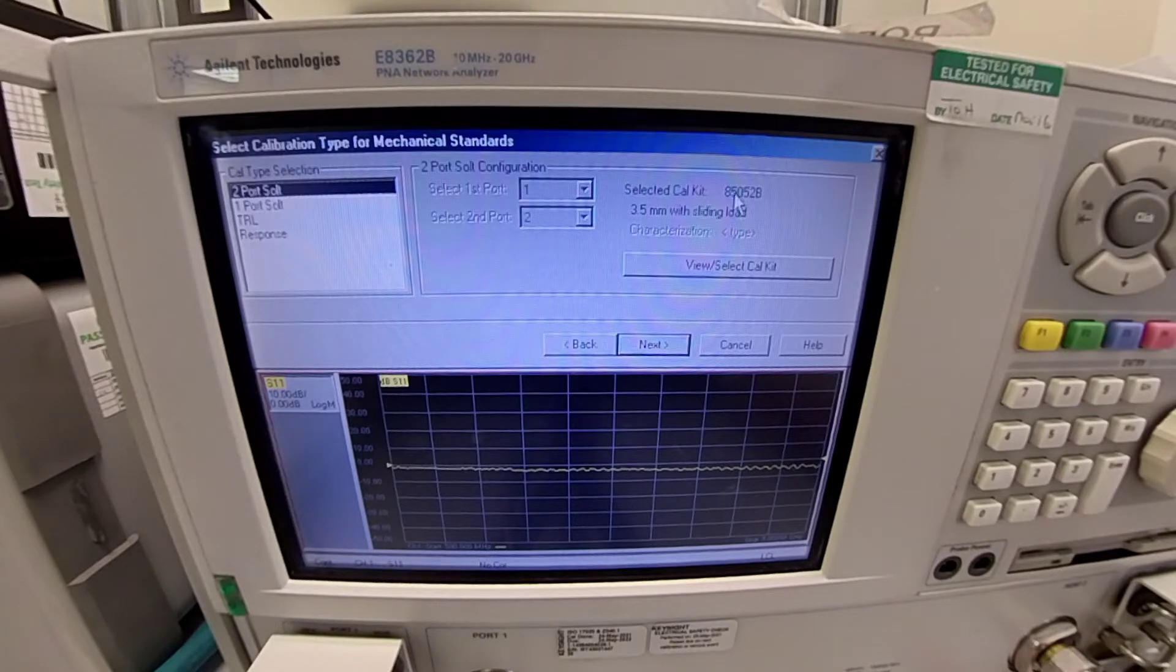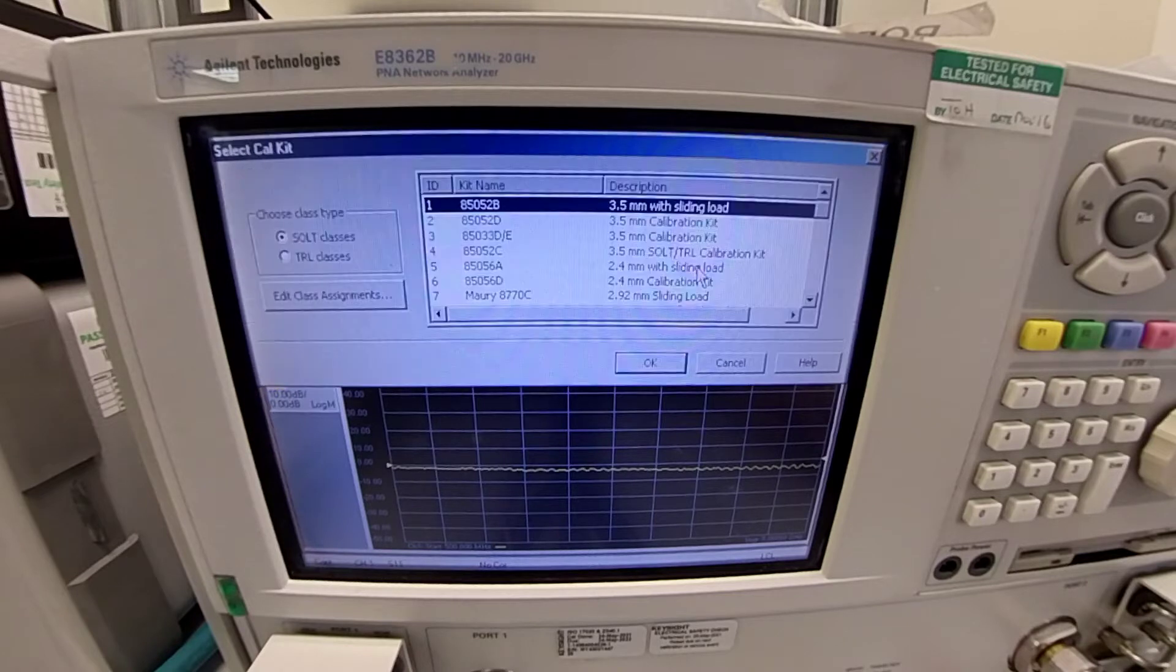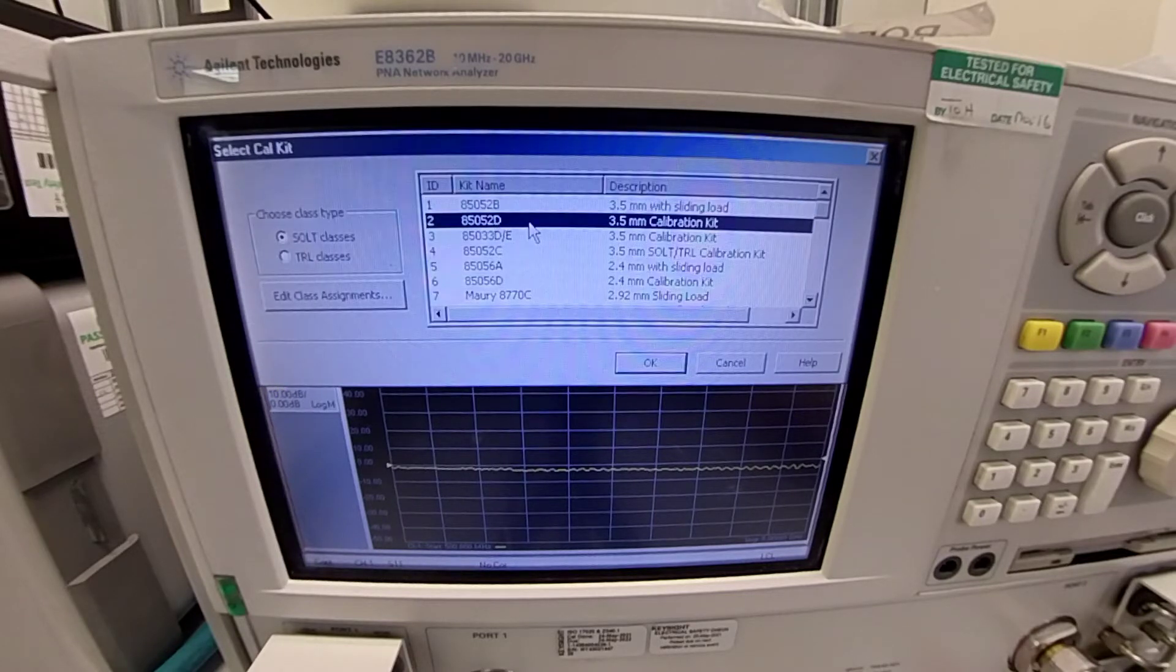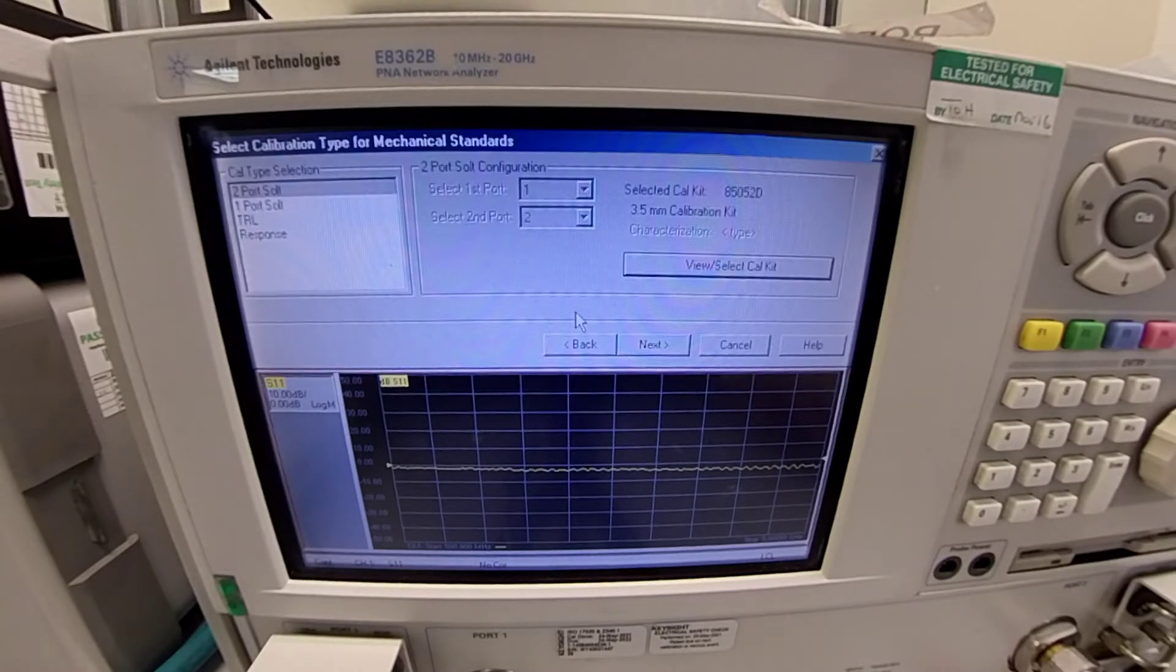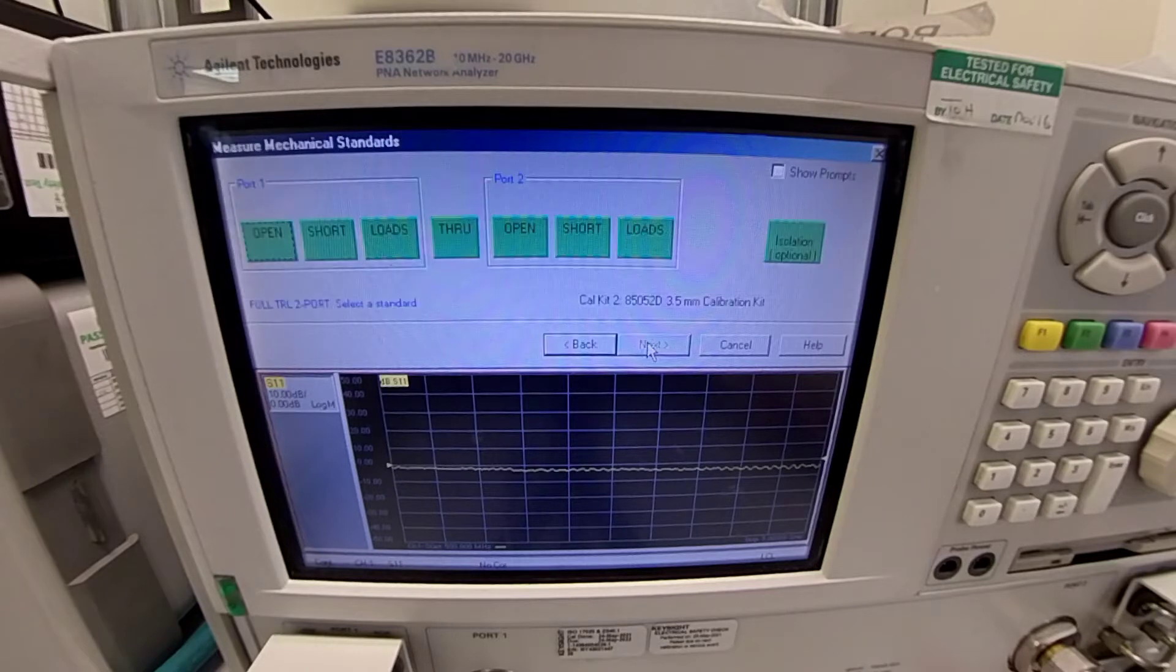The calibration kit is set to 850-52D, which is accompanied with this analyzer. You can select the kit of your own choice, whichever analyzer you are using. Select OK and press Next. As you can see, we have port number 1 and port number 2. We do it in a stepwise manner. First, we select and open port 1 and start the calibration process.